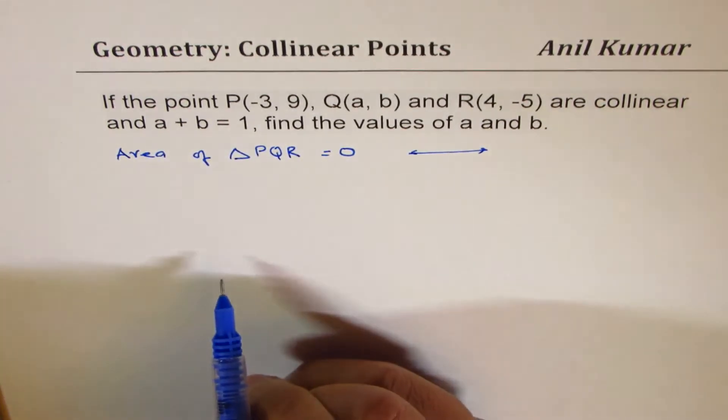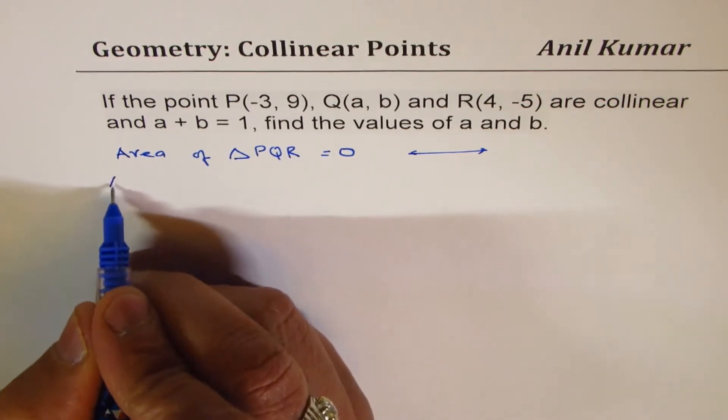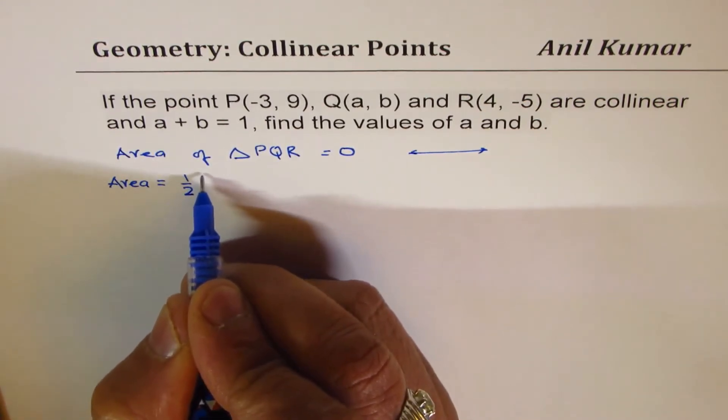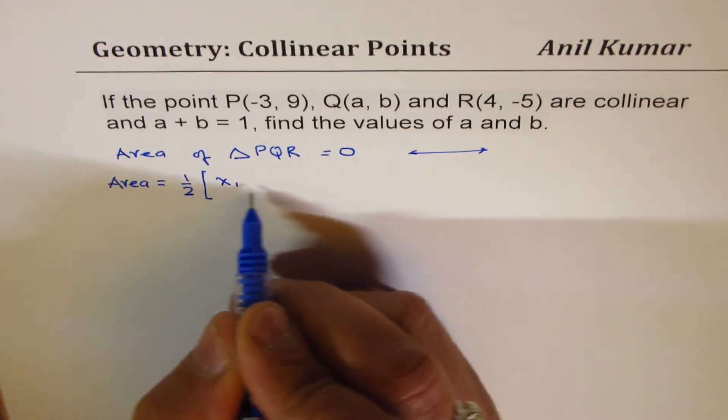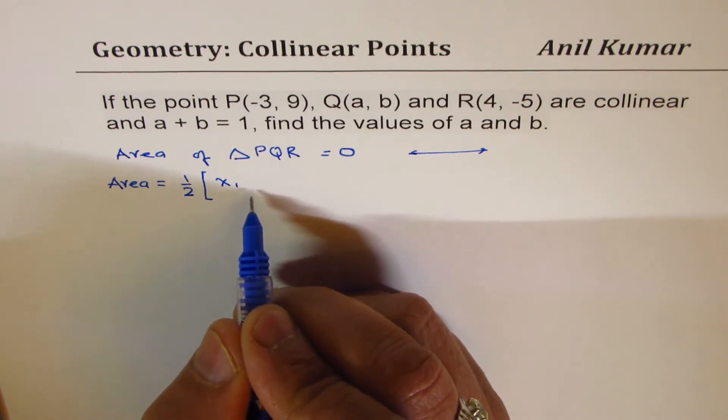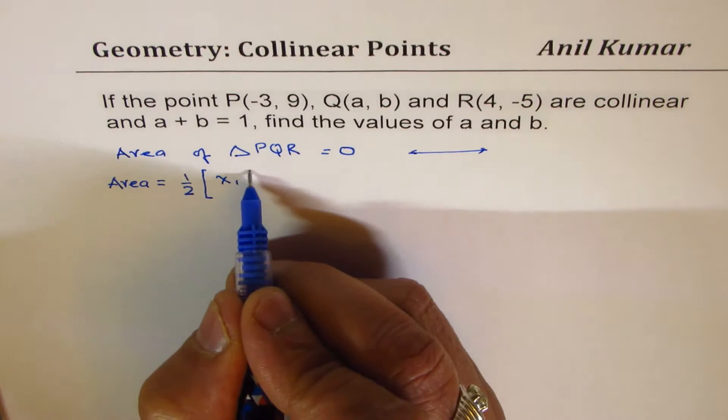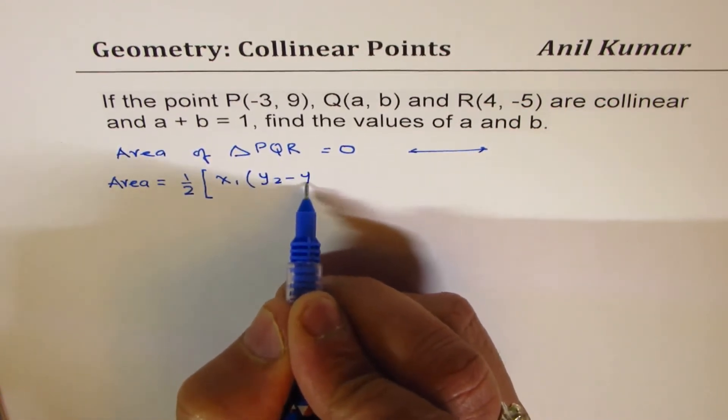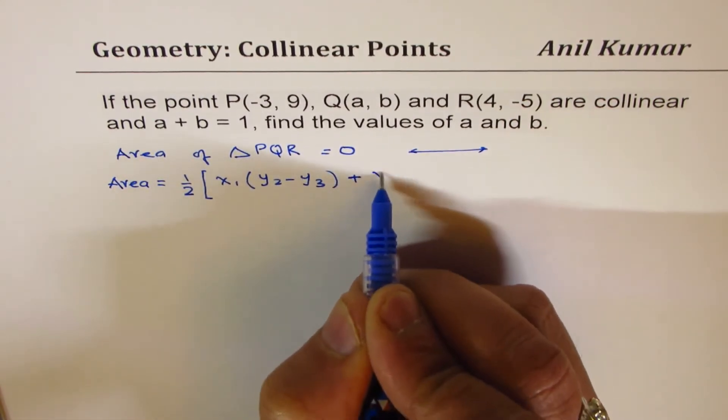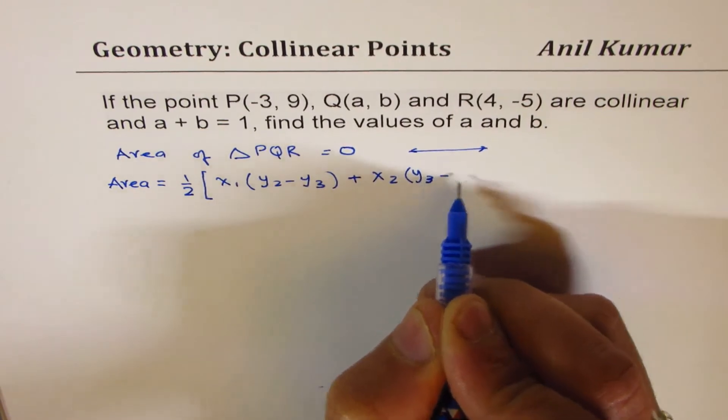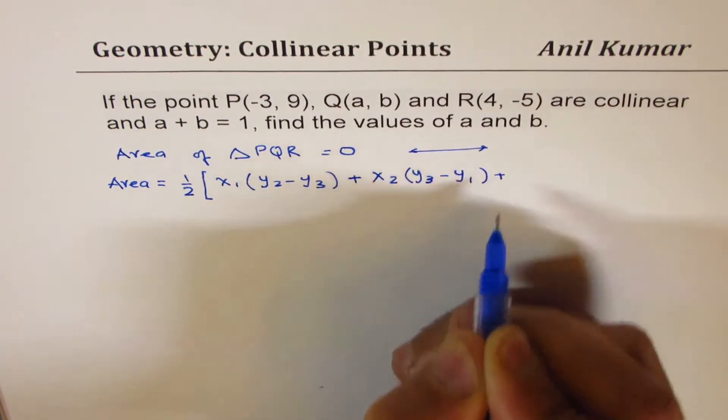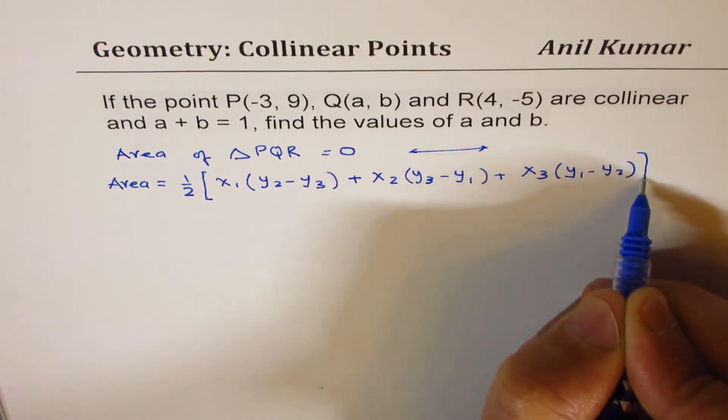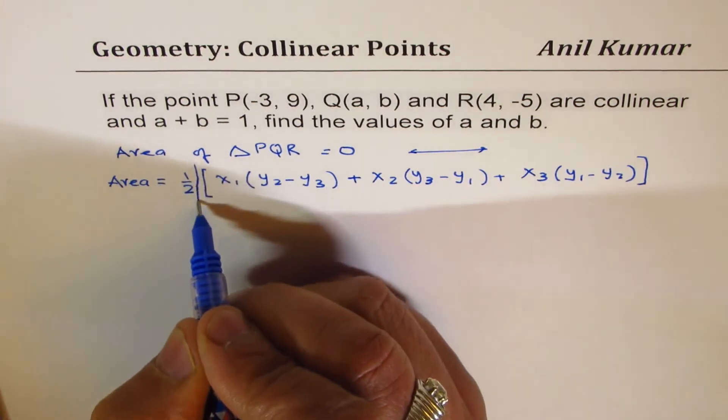So the area has to be 0. Now the formula for area is equal to half of, if the points are x1, y1, x2, y2 and x3, y3, then the formula is x1 times (y2 minus y3) plus x2 times (y3 minus y1) plus x3 times (y1 minus y2). And we always take the absolute value of this.